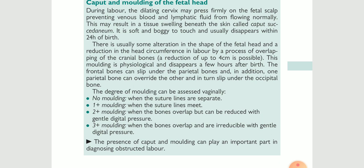Third degree molding is when the bones overlap and are irreducible with gentle digital pressure. Whenever the bones overlap each other and it is difficult to separate them by exerting digital pressure, it means the molding is in the third stage.